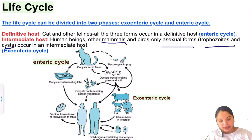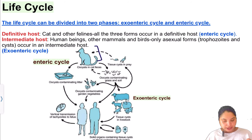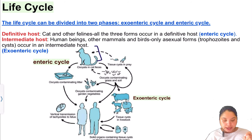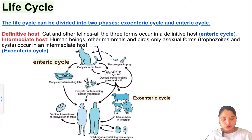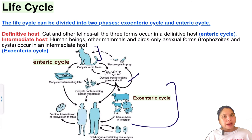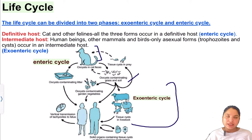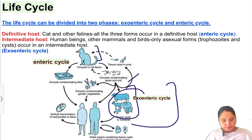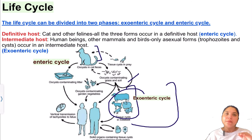The cat eats tissue cysts, and then passes oocysts in its stool. The oocysts contaminate soil and grass. Mammals consume the contaminated grass and get infected. Humans can also get infected by consuming undercooked meat. When Toxoplasma enters the human body, it can cross to the fetus via the placenta. This is how the cycle continues.